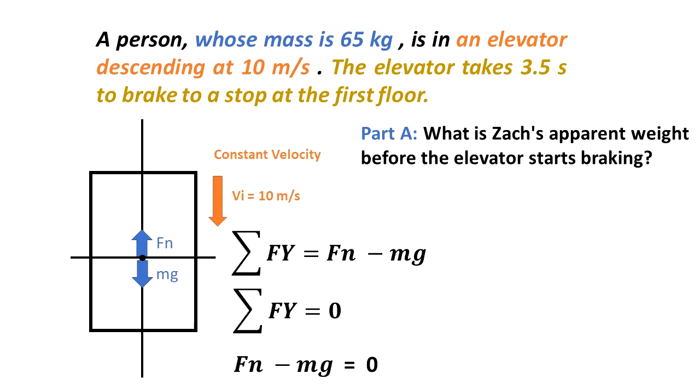Since we are in static equilibrium, the summation of the forces in the y direction is also equal to zero. That means that Fn minus mg is equal to zero. If we solve for Fn, we get that Fn is equal to mg.